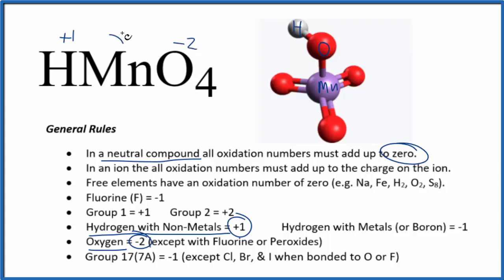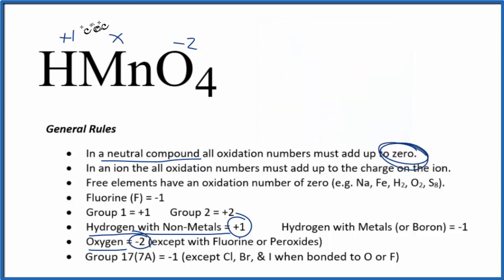If we call this manganese atom x, we can set up an equation because everything's going to equal zero. So we can say one plus x plus four oxygens, and each one has an oxidation number of minus two. All of that equals zero.